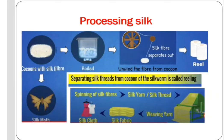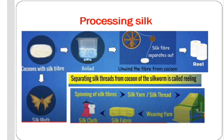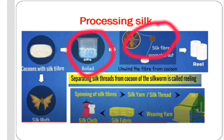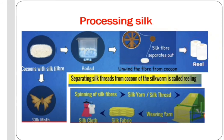Processing silk: inside the cocoon, caterpillars develop into silk moths. The cocoons are then boiled or exposed to steam, causing the silk fibers to separate out. This is done by a special device. Once the end of the fiber is obtained, it is unwound from the cocoon and wound on a reel. Separating silk threads from the cocoon of the silkworm is called reeling.